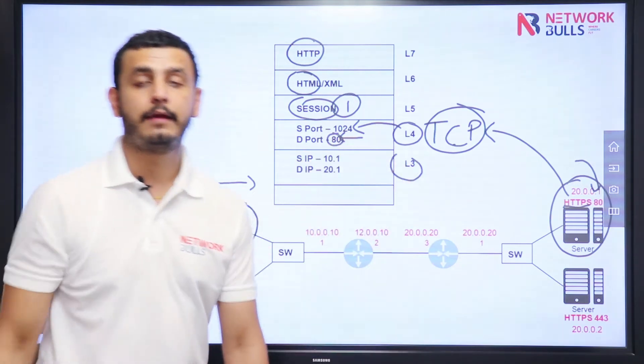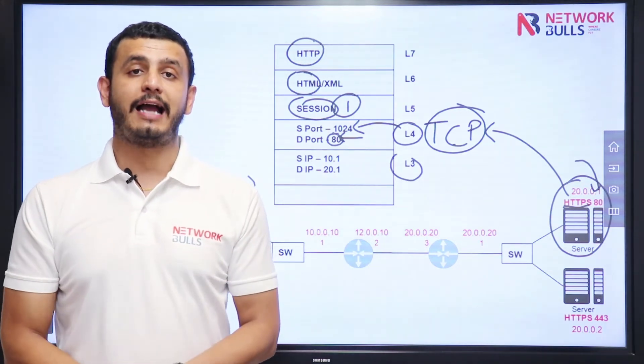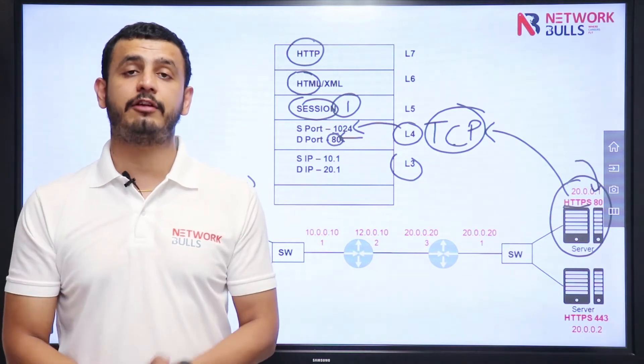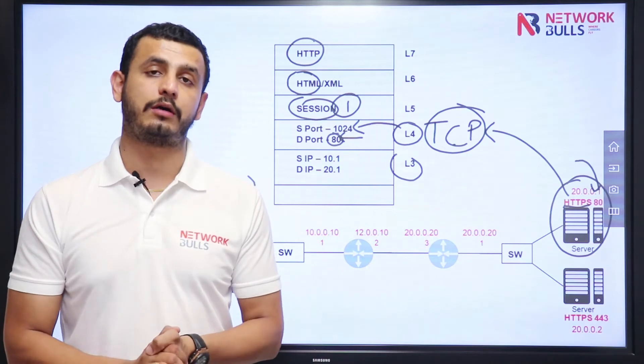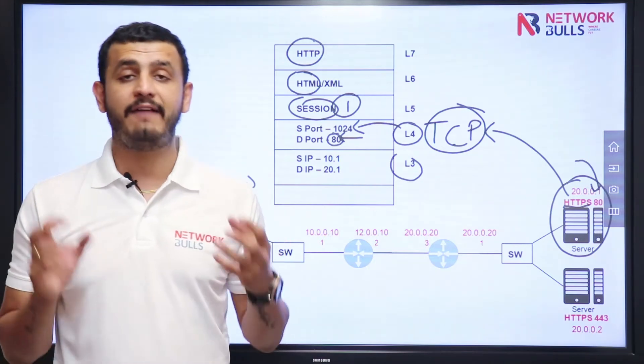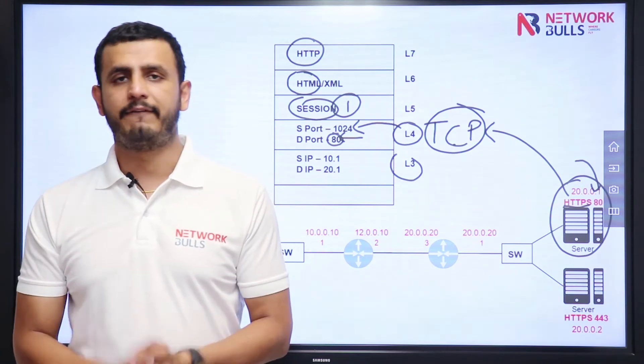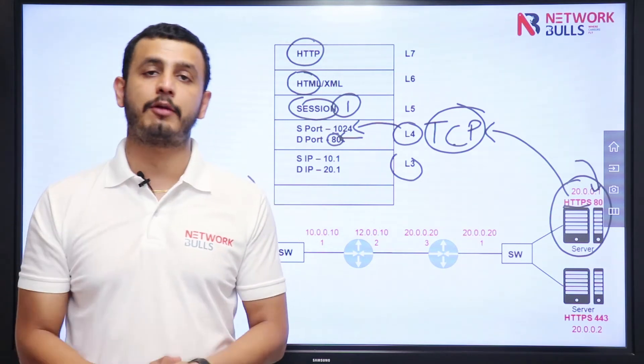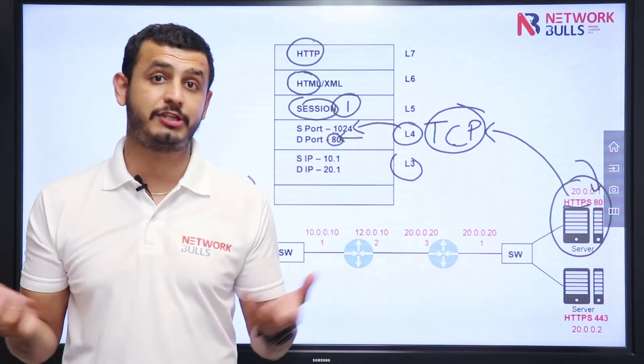Now at Layer 3, there will be a source IP and there will be a destination IP. IP addresses are the logical addresses which are defined on each and every device in the network. You want to know why we call them logical? Because we can change them, whereas physical addresses or MAC addresses are called hardware addresses because we cannot change them.